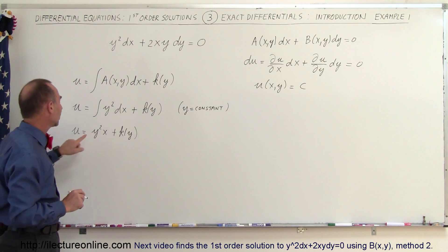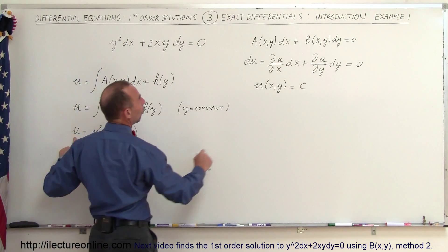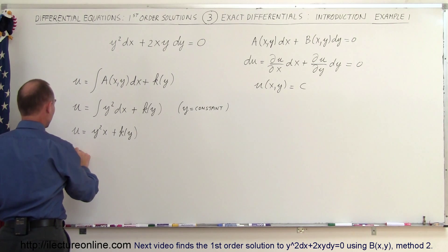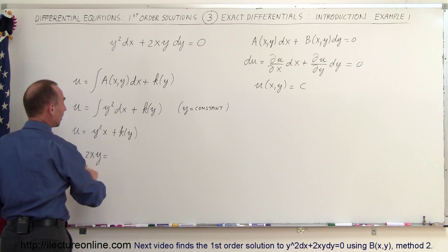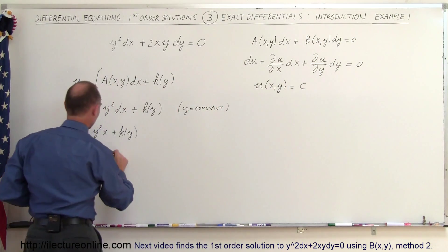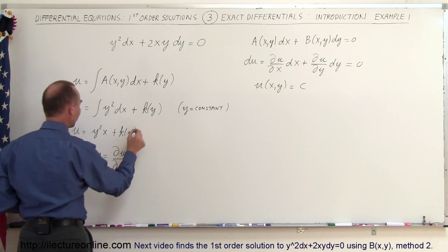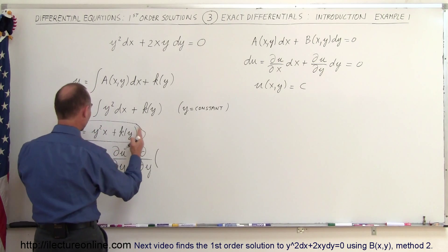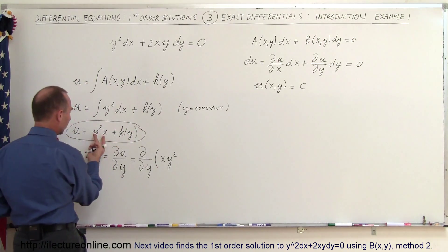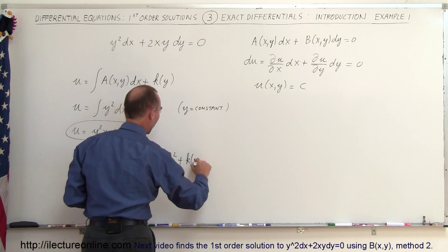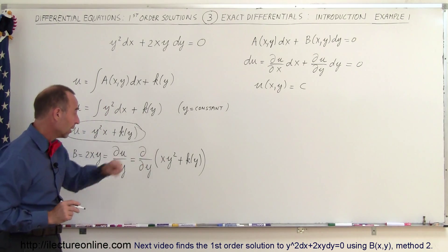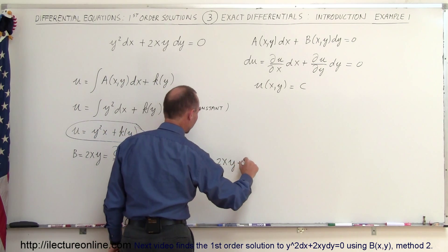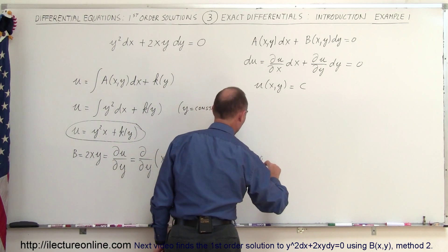To find k(y), we realize that if we take the partial of u with respect to y, this must equal N, which is the known quantity 2xy. So we write: N equals 2xy equals the partial of u with respect to y. Since we found u equals xy squared plus k(y), we take the partial of that expression with respect to y. Since x is constant, this becomes 2xy plus the partial of k(y) with respect to y.